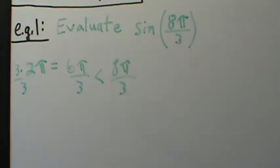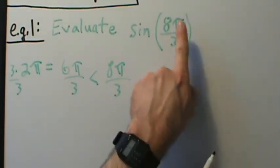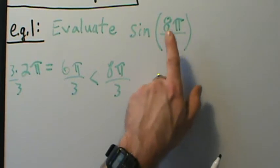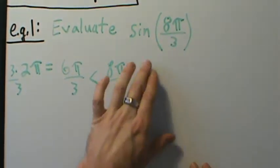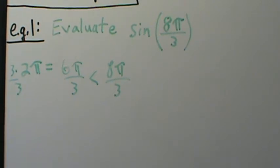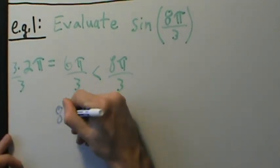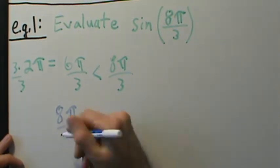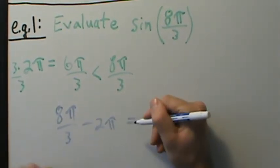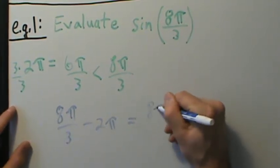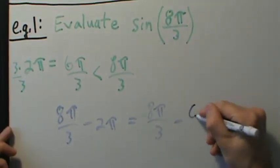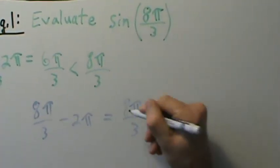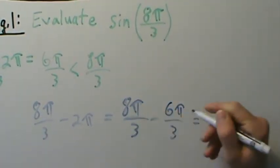So if we want to use periodic properties to evaluate this, we have to subtract 2π from this — it turns out only once — but we subtract 2π as often as we need to get some angle between 0 and 2π that has the same sine. So: 8π over 3 minus 2π, and remember 2π is the same as 6π over 3, so this is 8π over 3 minus 6π over 3, which gives us 2π over 3.